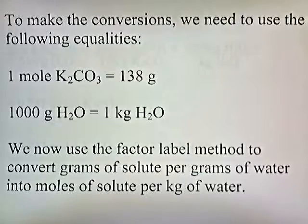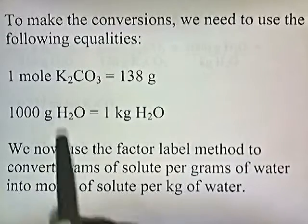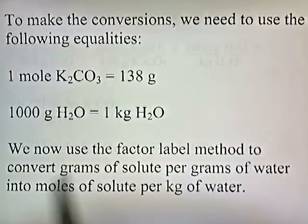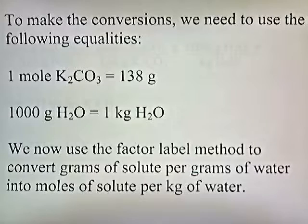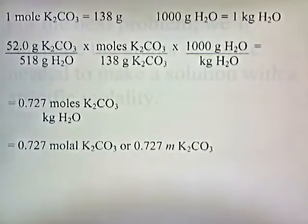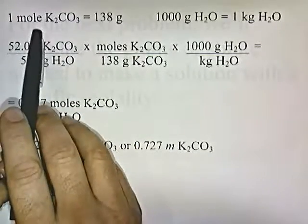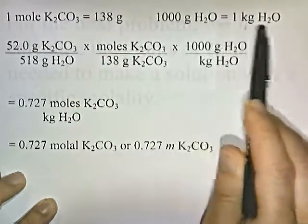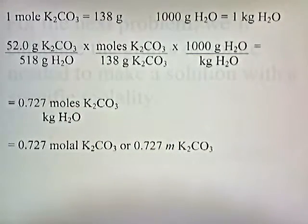To make the conversions, we'll need to use the following quantities: one mole of potassium carbonate is 138 grams, and 1,000 grams of water is the same as a kilogram of water. We'll use the factor-label method to convert grams of solute per grams of water into moles of solute per kilogram of water. Here are the equalities we're going to use to make the conversions.